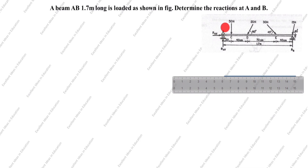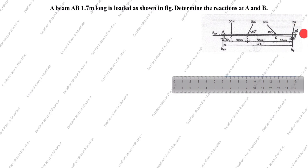Support A is a hinged support. A hinged support has two reactions: horizontal and vertical. Horizontal is RAX, vertical is RAY. Support B is a roller support. Roller support always acts vertically upward — the direction of force is always perpendicular to the surface.